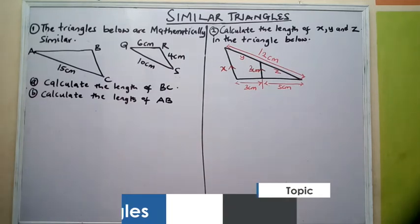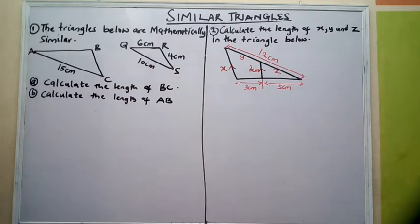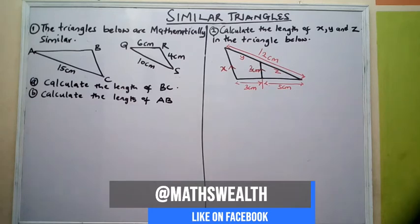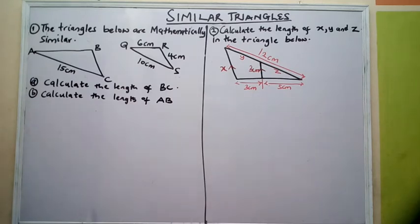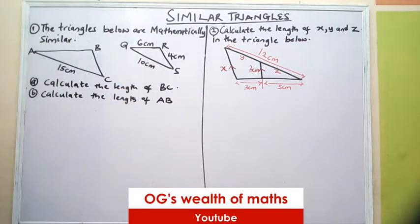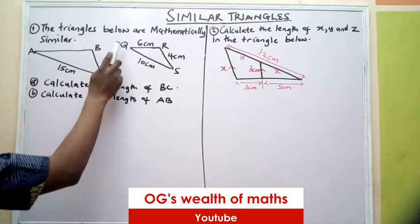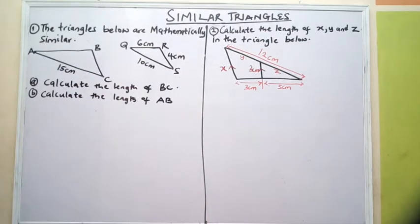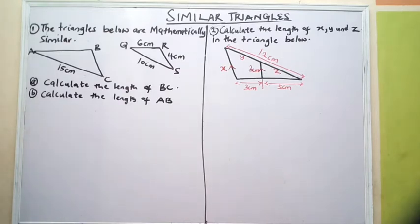In this problem we have a couple of questions to solve. If you look at the first question, the triangles below are similarly similar. ABC is an enlargement of QRS, therefore ABC and QRS are said to be mathematically similar, because ABC is an enlargement of QRS.